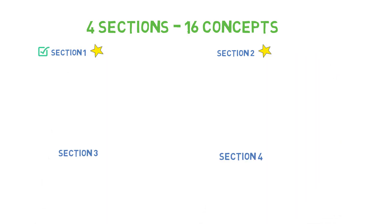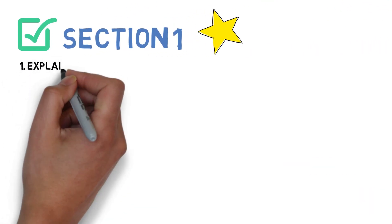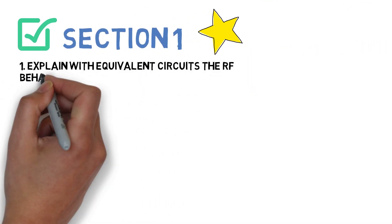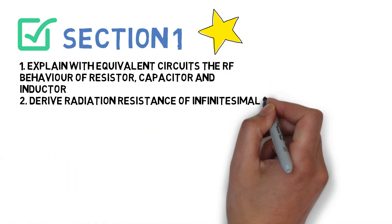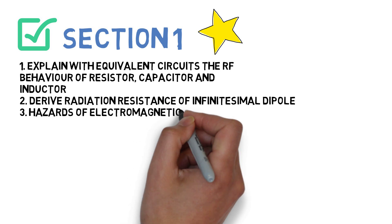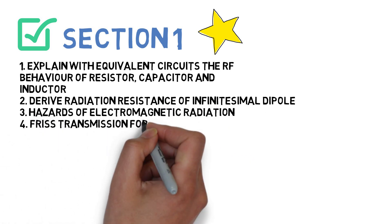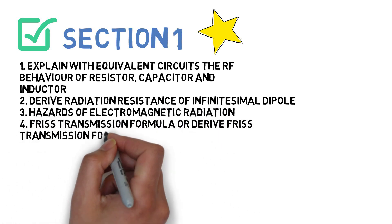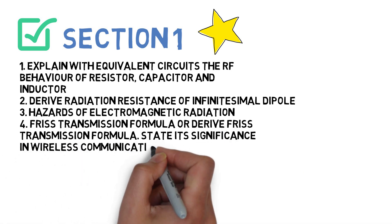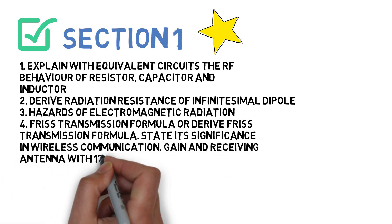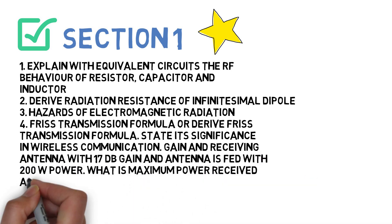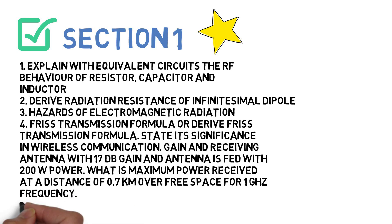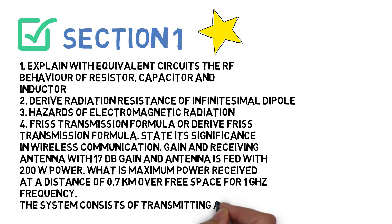For Section 1, you need to do four questions. First: explain with equivalent circuits the RF behavior of resistor, capacitor, and inductor. Second: derive the radiation resistance of an infinitesimal dipole. Third: hazards of electromagnetic radiation. Fourth: Friis transmission formula — derive it, its significance in wireless communication, and a numerical may also be given.